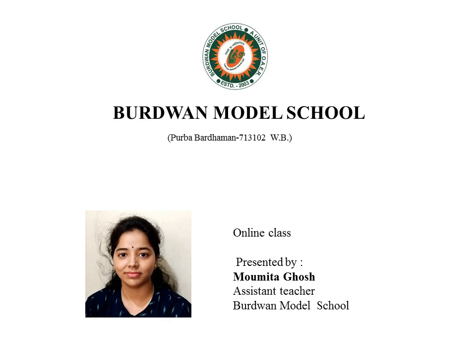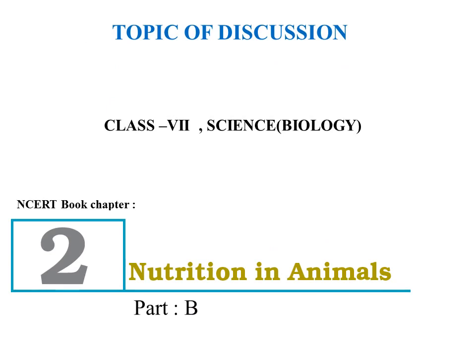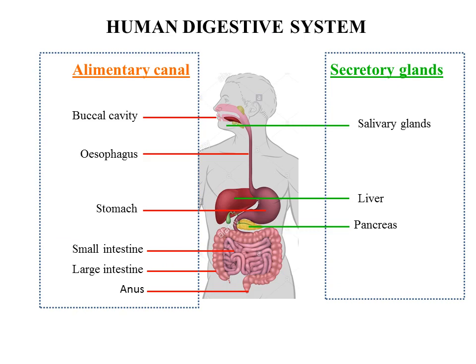Today we will start the topic of nutrition in animals — how digestion takes place in different compartments of the alimentary canal. As you know, we take food through the mouth, digest and utilize it, and the unused parts of the food are excreted out. Have you ever wondered what happens to the food inside the body?